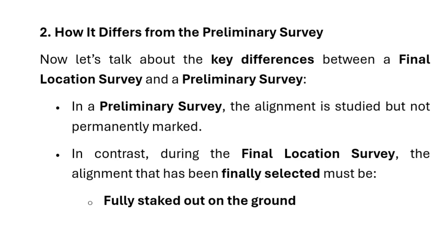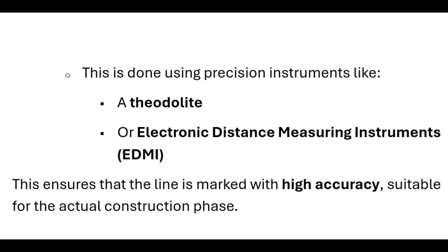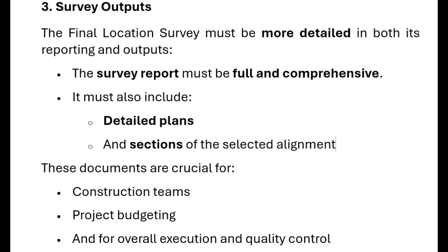Now let's talk about the key differences between a final location survey and a preliminary survey. In a preliminary survey, the alignment is studied but not permanently marked. In contrast, during the final location survey, the alignment that has been finally selected must be fully staked out on the ground. This is done using precision instruments like a theodolite or electronic distance measuring instruments (EDMI). This ensures that the line is marked with high accuracy, suitable for the actual construction phase. The final location survey must be more detailed in both its reporting and outputs, and the survey report must be full and comprehensive.